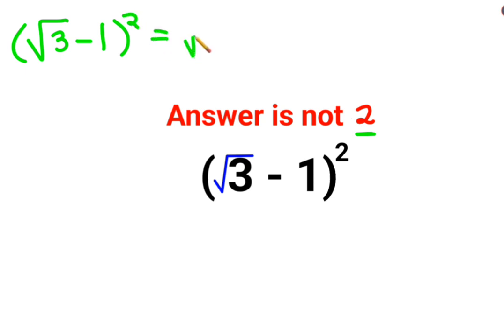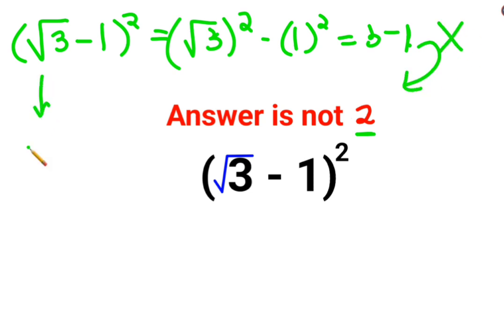Unfortunately people thought that this is equal to root 3 square minus 1 square which got them 3 minus 1, which got them the answer as 2. Now this is absolutely incorrect. Here this is basically in the form of a minus b the whole square.